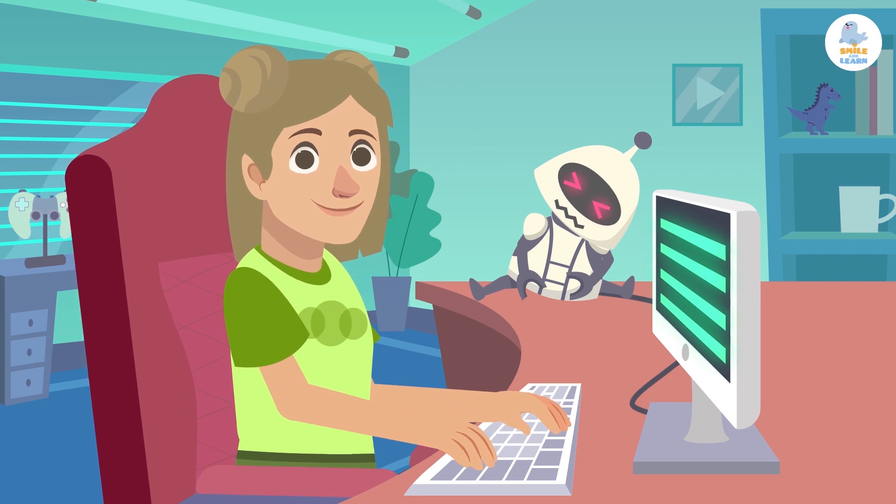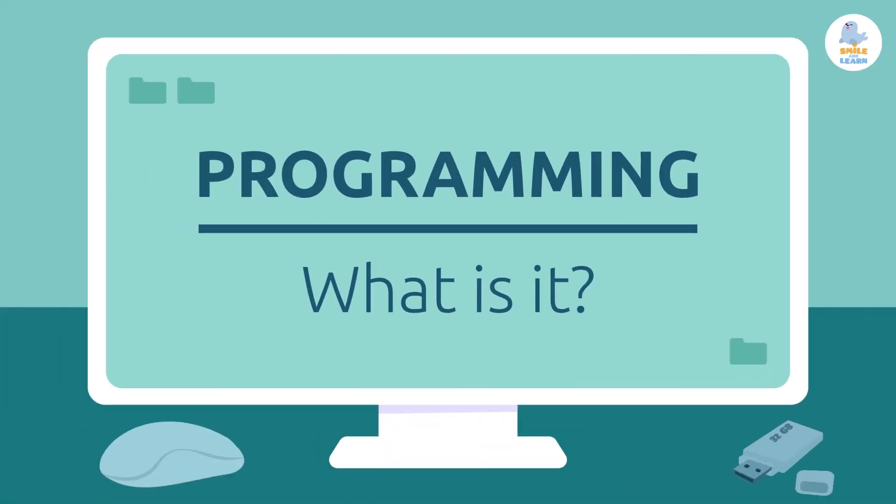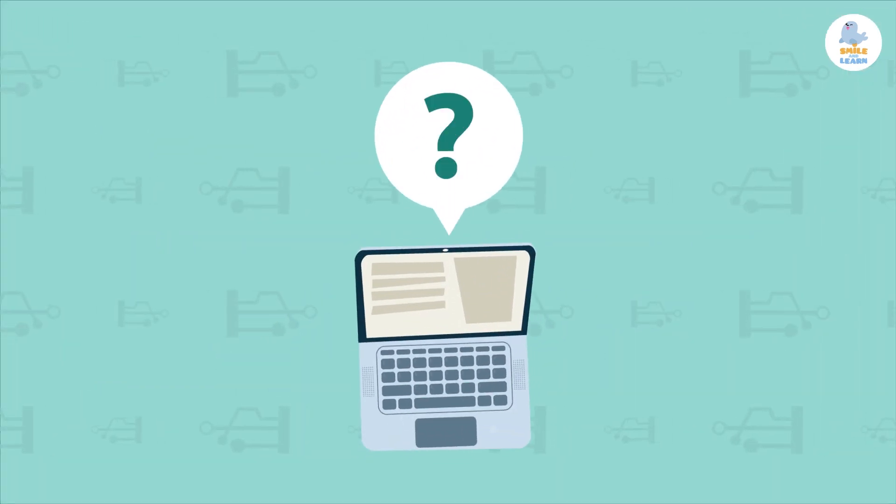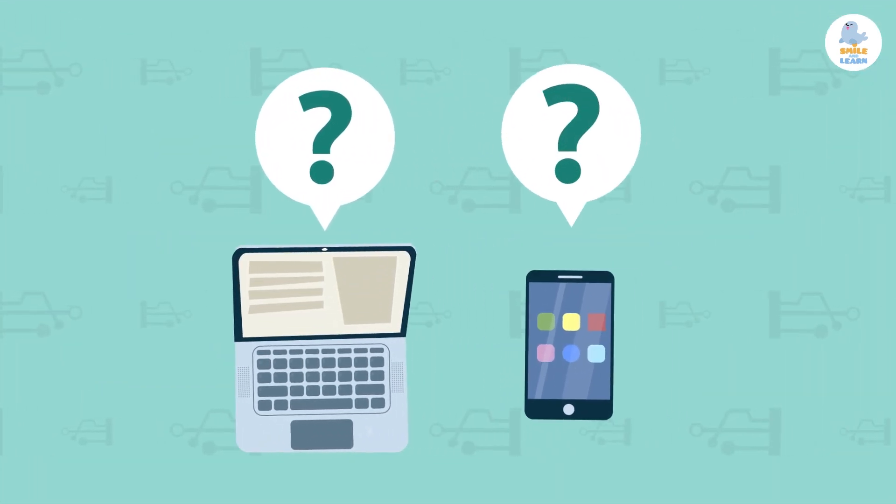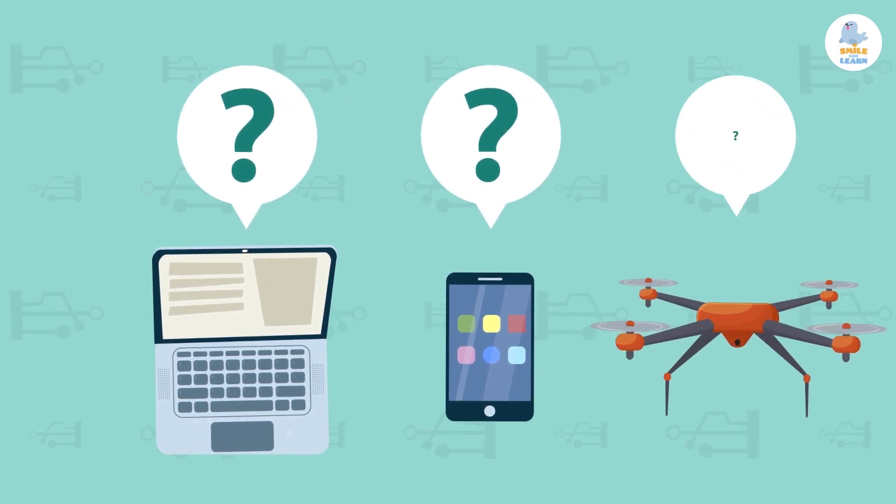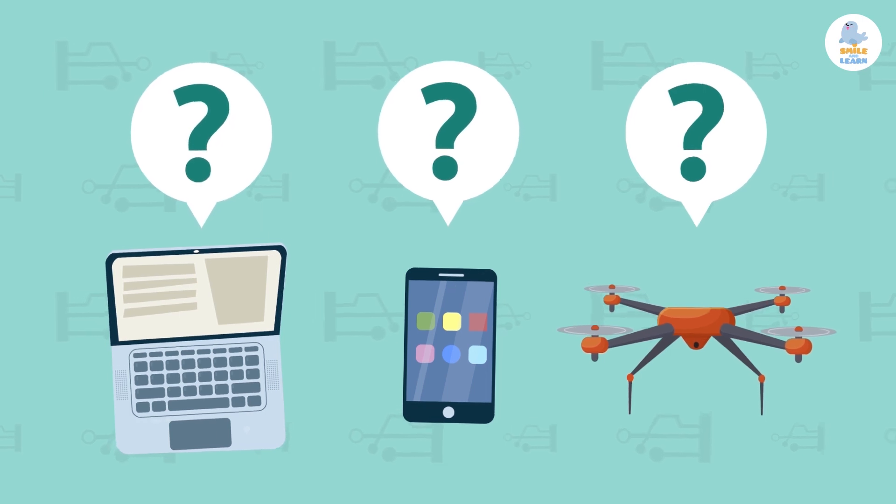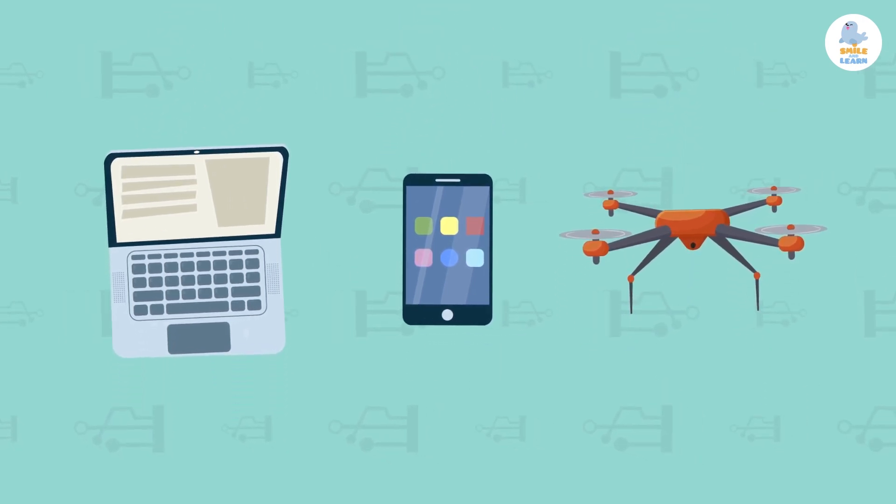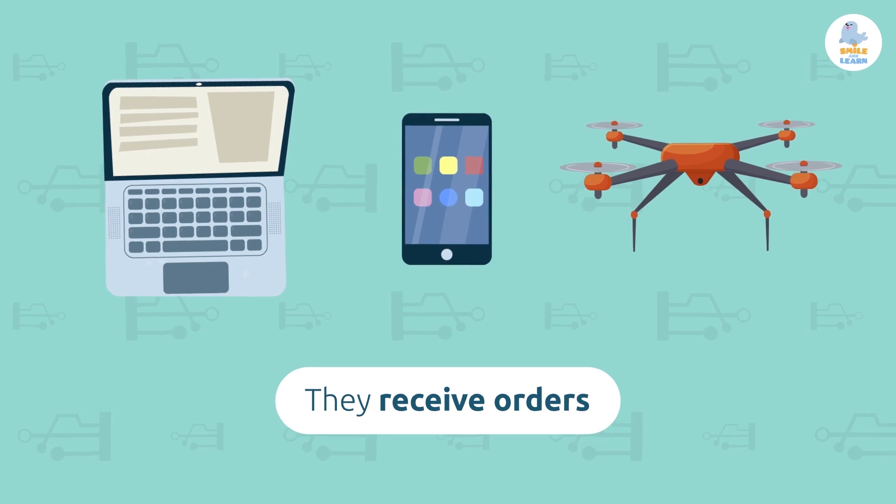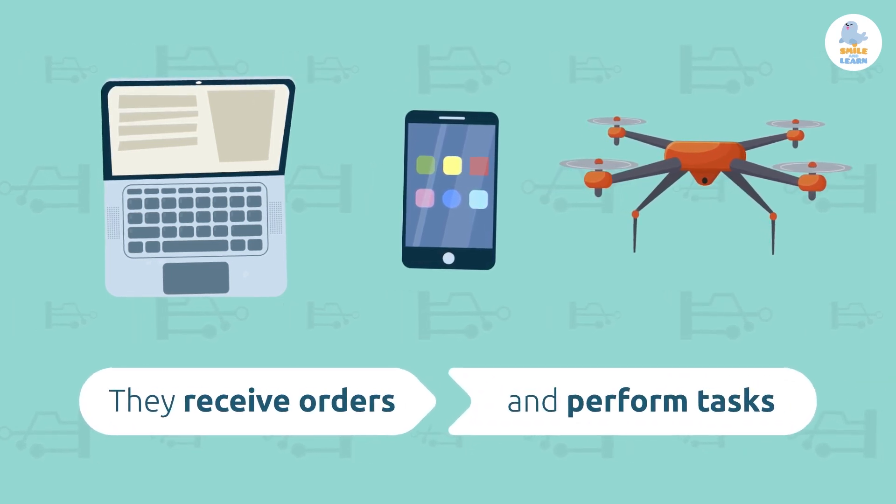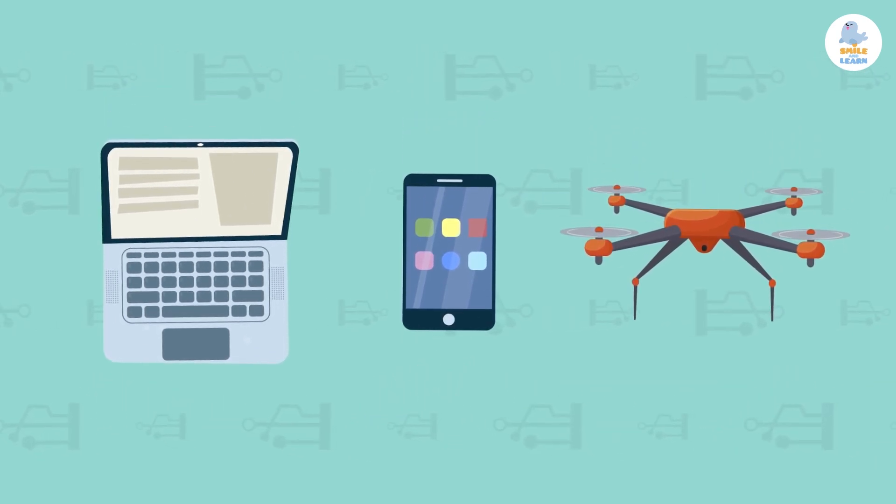Do you know how computers work, or cell phones, or what about machines? It may seem like magic, but it's not. They function in a very simple way: they receive orders and perform tasks. And how is this possible?